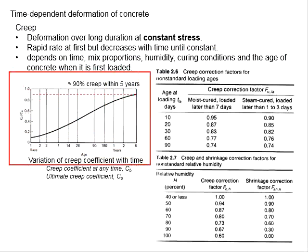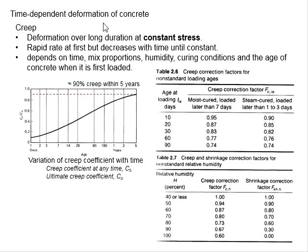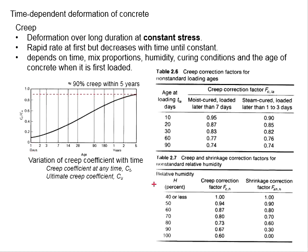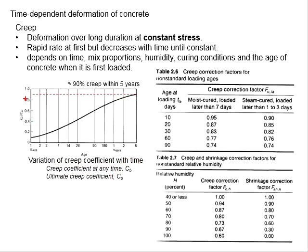This figure shows the variations of the creep development over time. The y-axis represents a ratio of creep coefficients, which is ct — the creep coefficient at any time — divided by cu, the ultimate creep coefficient. It basically means the amount of creep developed at any time out of the total creep developed by the concrete over a long period of time.